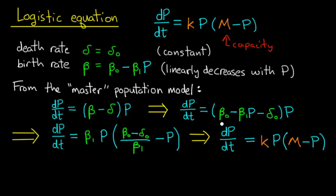So I get beta one comes out in front, and I get beta zero over beta one minus delta zero over beta one. And that becomes beta zero minus delta zero divided by beta one. A little bit of renaming and we get the logistic equation.